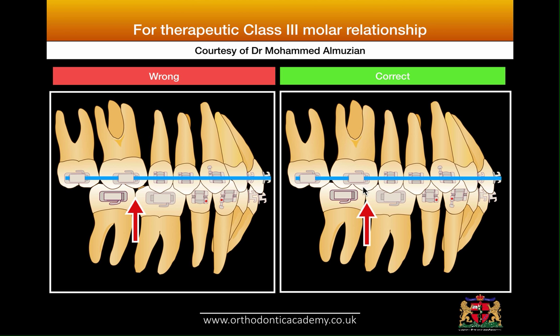By positioning the tube this way, you will get a nice intercuspation. In addition, to improve and enhance the intercuspation in therapeutic Class 3, you have to do some selective grinding of the palatal cusp of upper five, because the palatal cusp of upper five has a very high profile compared to the palatal cusp of upper six, and this might interfere with the occlusion at the central fossae of lower six and prevent good intercuspation. So you must grind the palatal cusp of upper five to make it round and low profile, like the palatal cusp of upper six.